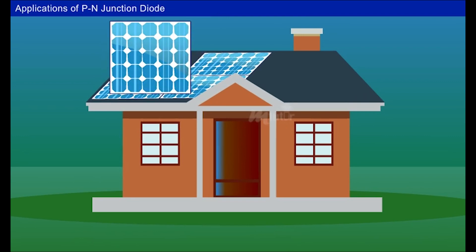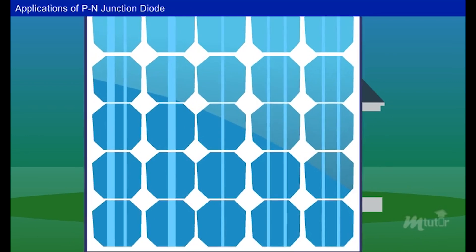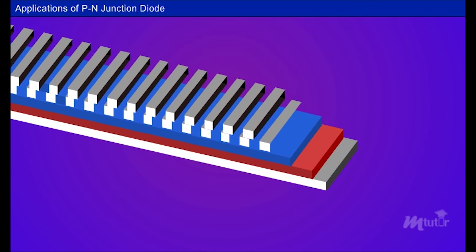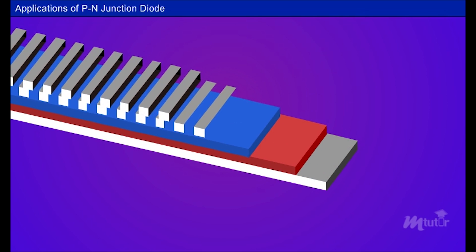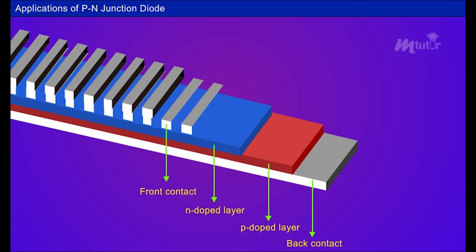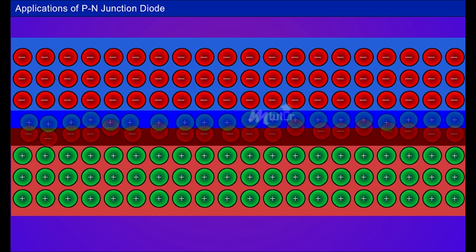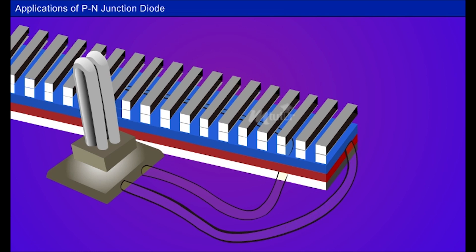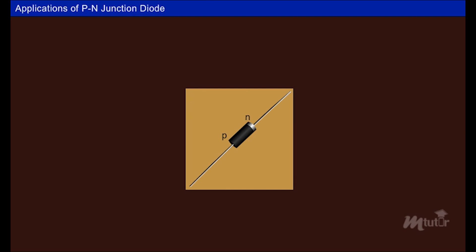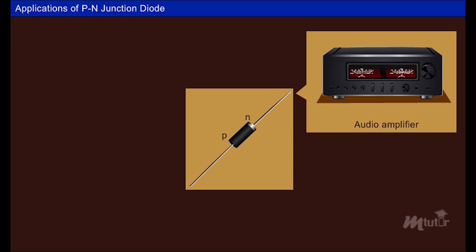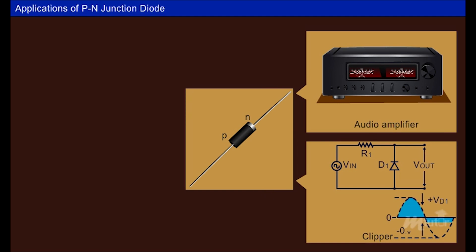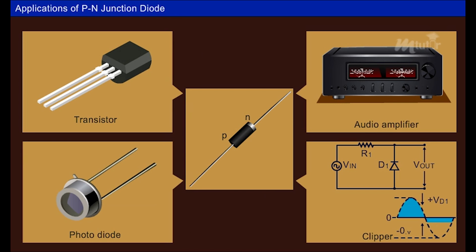P-N junctions are also used to manufacture solar cells. In solar cells, P- and N-type materials are sandwiched together with back and front contacts, and this arrangement is protected by glass material. The electrons and holes combine together and form the junction. When photon energy hits the silicon layer, it creates current in the outer conductor, causing light to glow. P-N junction diodes are also used in audio amplifiers to clamp and clip audio signals, transistors, photodiodes, etc.